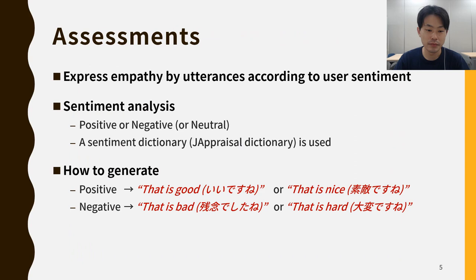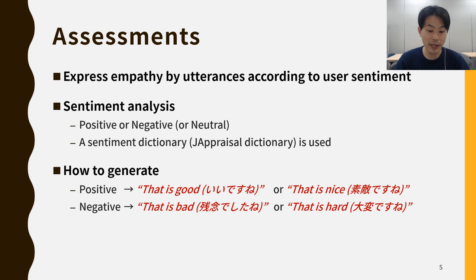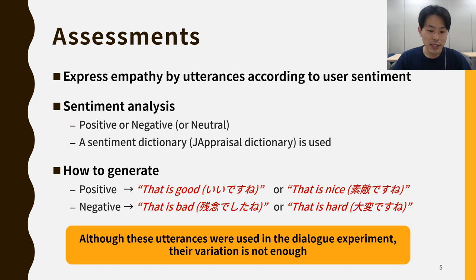Let me explain one of the listener responses the system generates. In this study, we focus on assessments. The assessment responses express empathy towards the users. In order to generate these responses, we use a sentiment analysis that classifies user utterances into positive, negative, or neutral. If it is positive, the system generates 'that's good' or 'that's nice.' If it's negative, the system generates 'that's bad' or 'that's hard.' Although these utterances were observed in the previous dialogue experiment, their variation is limited and not enough.